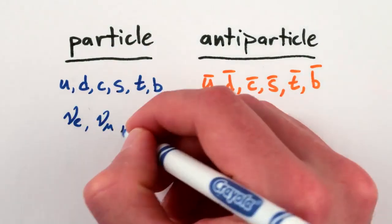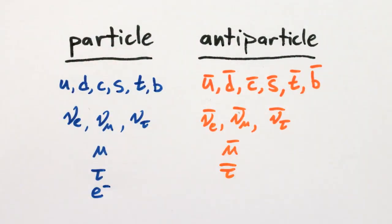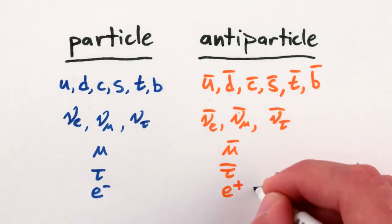There are anti-quarks, anti-neutrinos, anti-muons, anti-tauons, and of course, anti-electrons, though we call them positrons.